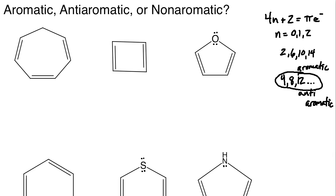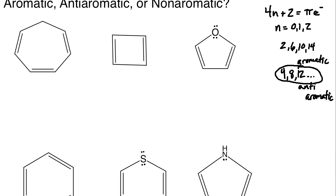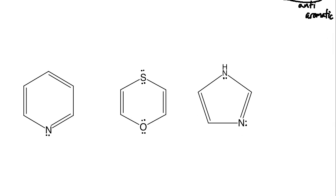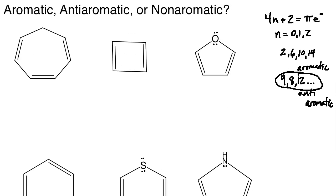The goal of this lecture is to determine whether the compounds shown are aromatic, anti-aromatic, or non-aromatic. There are six examples. I suggest you pause and attempt to solve these problems yourself before going through the walkthrough, to see if you can classify each compound correctly.